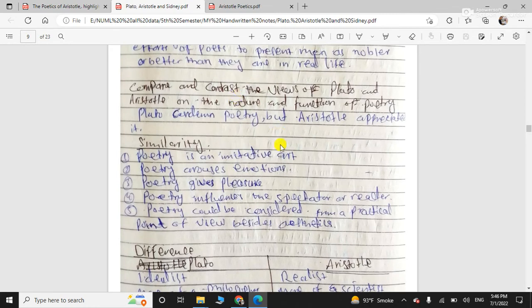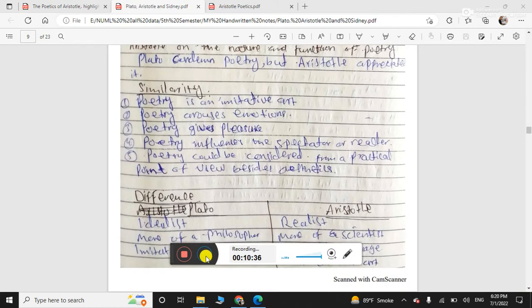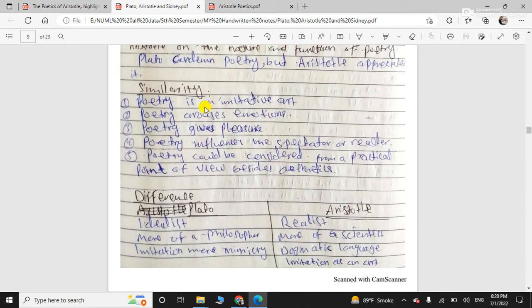So, he compared, so we have to compare the views of Plato and Aristotle. What similarity they have and what are the differences. So, we are looking at viewpoints. Plato and Aristotle, what similarity is there, what differences are there. So, the similarity in their ideas regarding poetry. He says that the similarity is both believe poetry is an imitation. This is different that Plato considered it a mere imitation, whereas Aristotle, he considers it as imitative art. So, poetry arouses emotions. Poetry gives pleasure. Poetry influences the speaker or reader. And poetry could be considered from a practical point of view besides aesthetics.